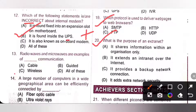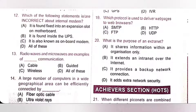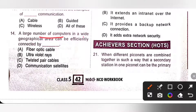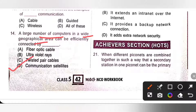Thirteenth one: radio waves and microwaves are examples of wireless communication. So, option C is the correct answer. Fourteenth one: a large number of computers in a wide geographical area can be efficiently connected by communication satellites. Option D is the correct answer. Communication satellites are best used when we need to connect computers in a wide geographical area, and they are widely used in WAN, Wide Area Network communication.